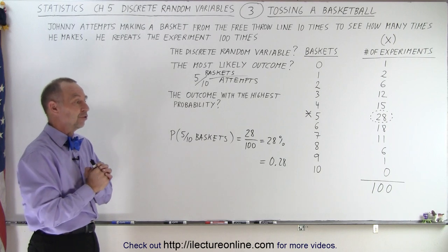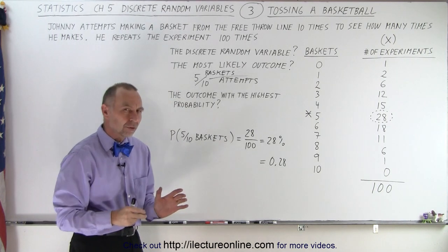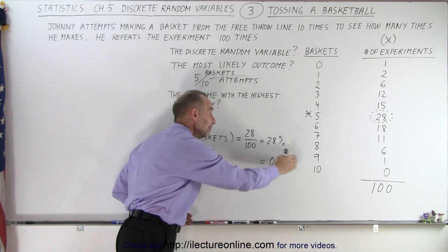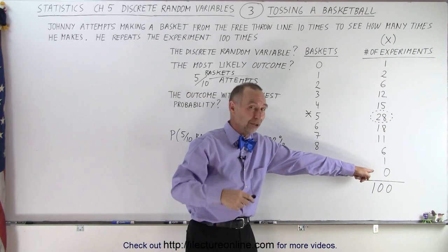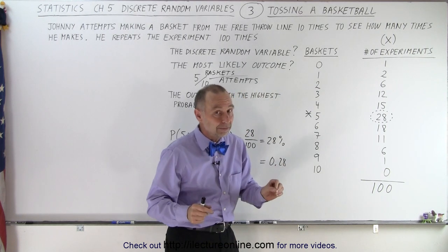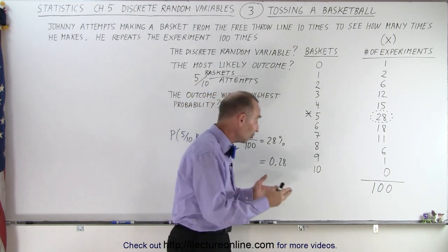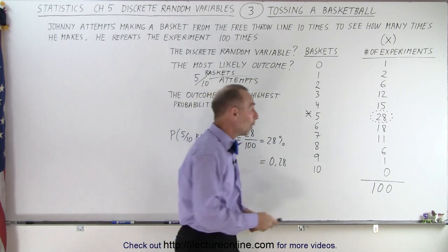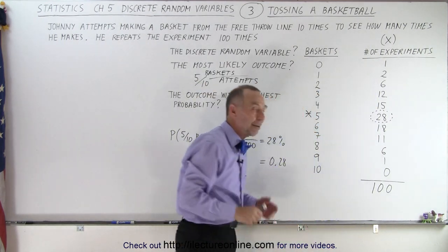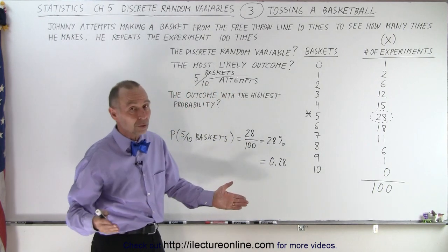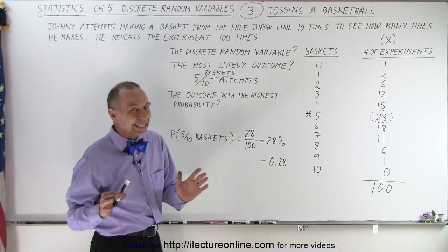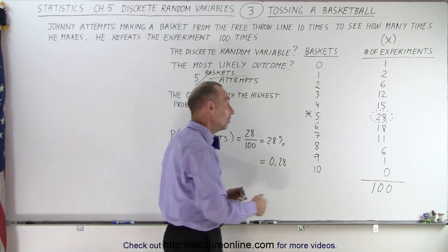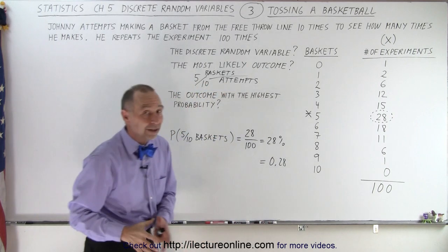However, if Johnny gets on the line and is going to shoot 10 baskets, it could be anything from no baskets made at all to all 10 baskets made. Just because in his 100 experiments he didn't get 10 baskets a single time, maybe if he tries enough he will eventually get 10 in a row. We don't know what's going to happen — that's why this is random. Based on historical information from 100 experiments, the most likely result is that he'll make 5 out of 10.